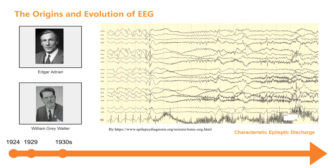During this stage, EEG gradually transformed from a theoretical tool to a medical diagnostic method. In 1935, American neurologist William Gray Walter applied EEG to epilepsy research, revealing the characteristics of abnormal brain discharges during epileptic seizures. This discovery was significant for epilepsy patients, helping doctors diagnose and classify epilepsy more accurately.